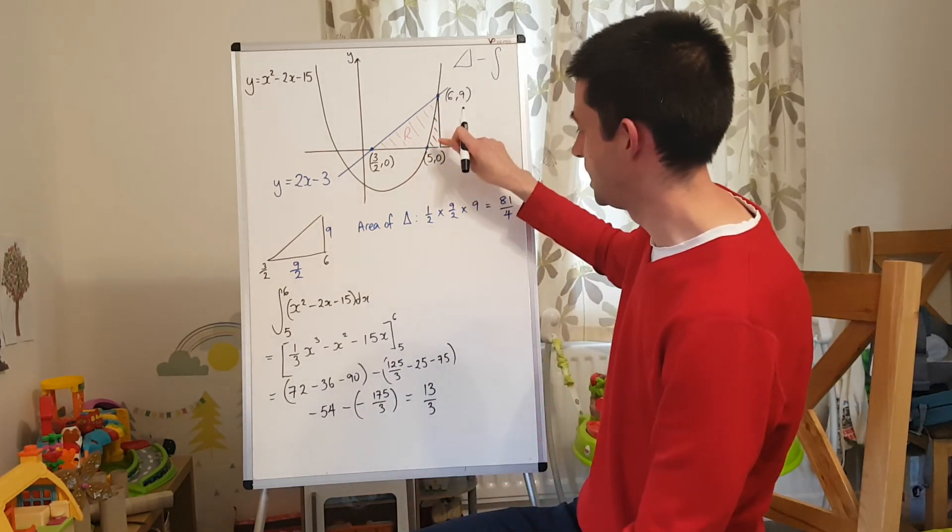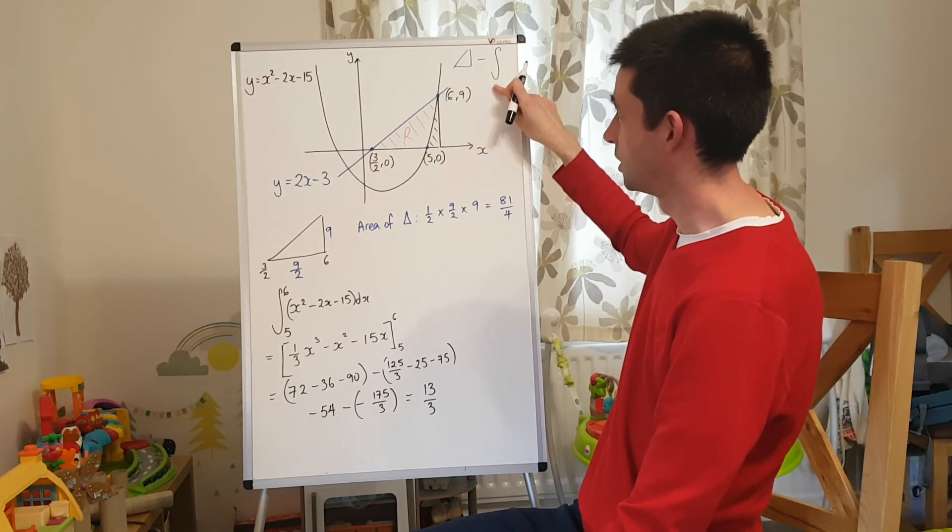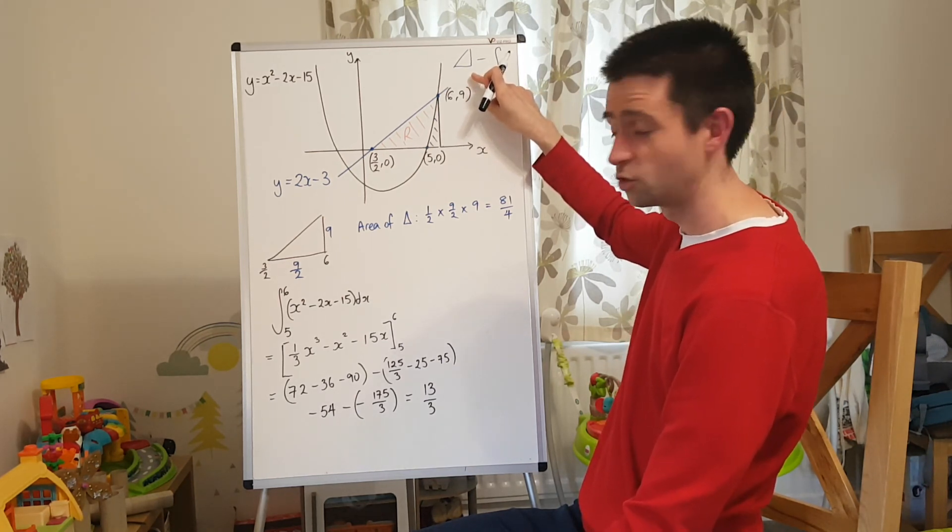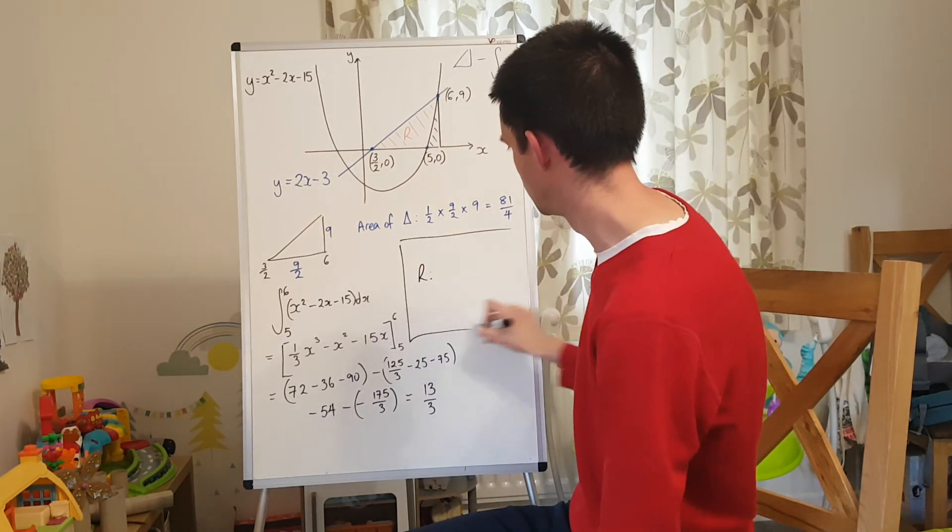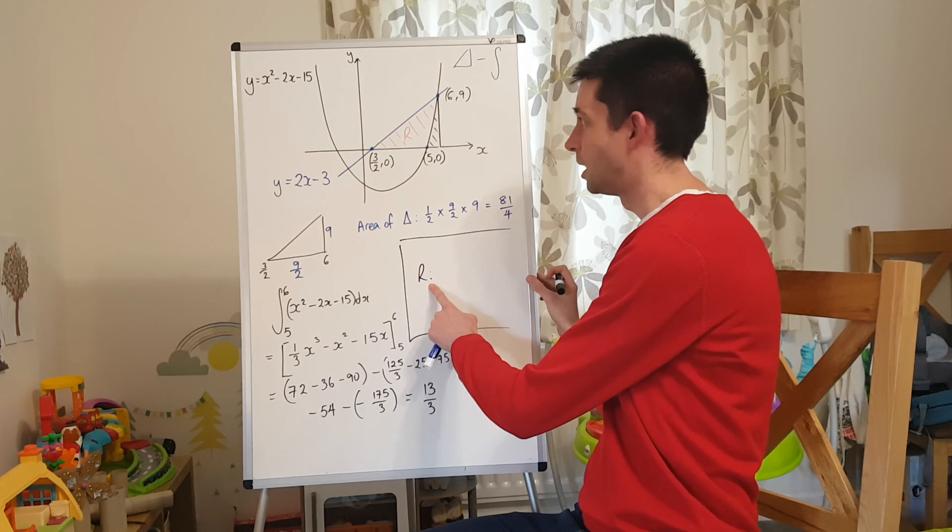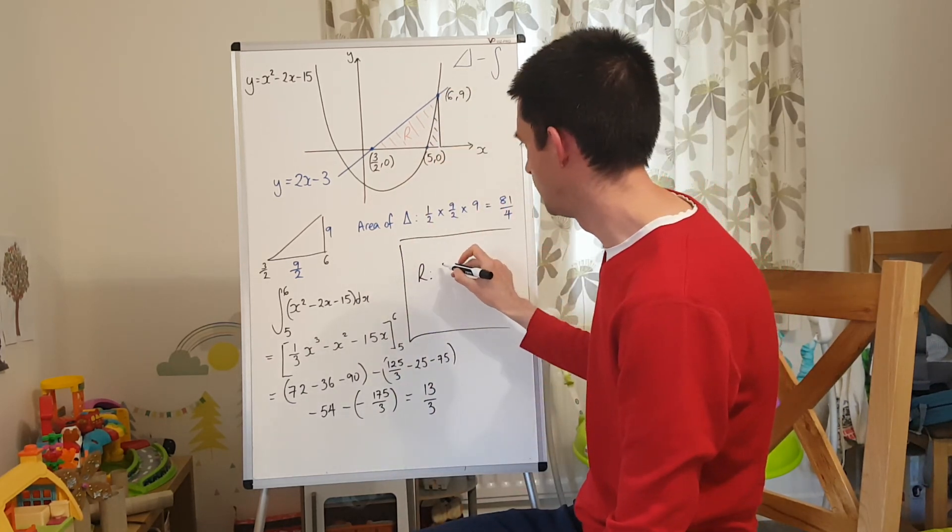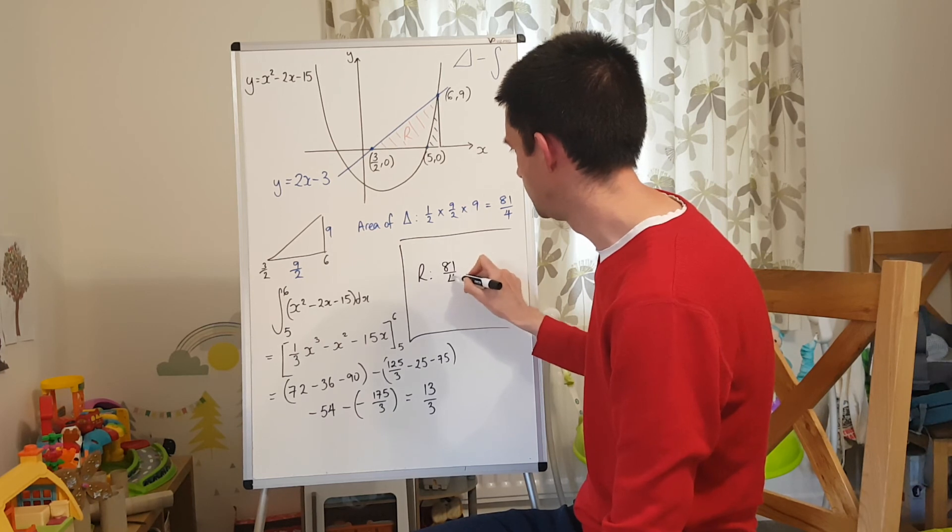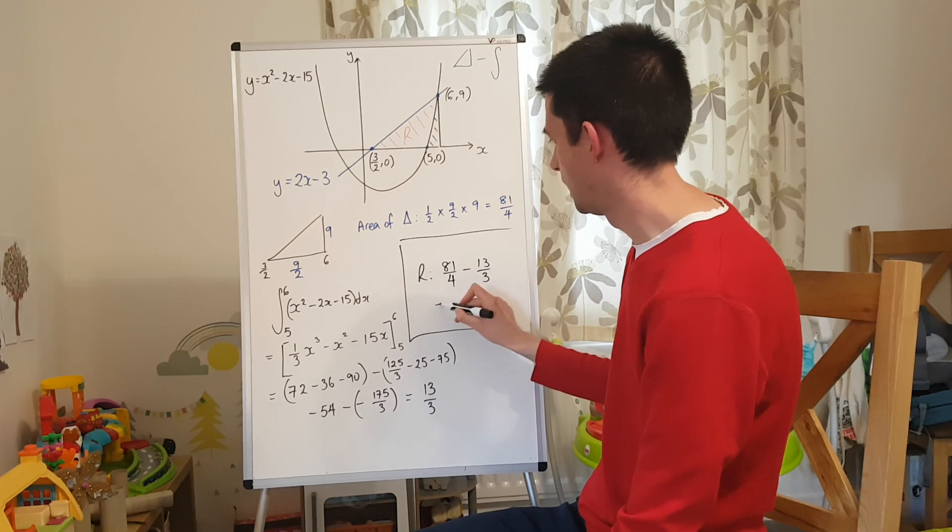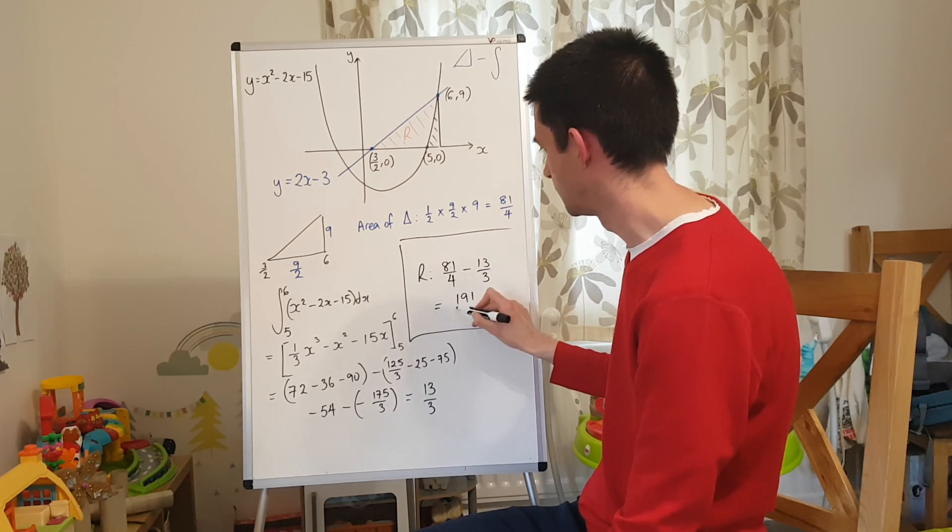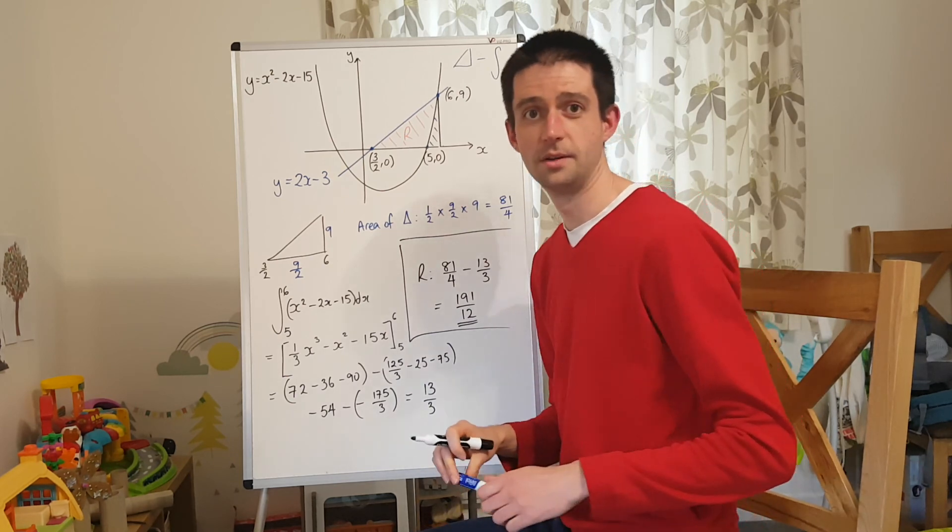So if I go back to what I was originally trying to work out, I now know that the area of my triangle, I'll just box it off so it's clear, that's what I'm doing. The region R is the triangle minus the integral. The area of the triangle we worked out to be 81 over 4. The integral we worked out to be 13 over 3. And that comes out as the rather beautiful 191 over 12.